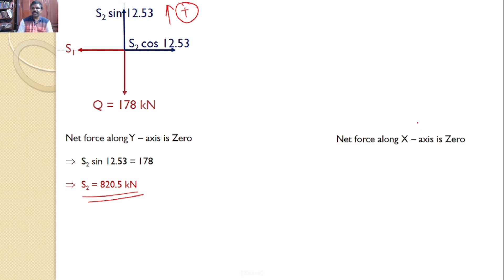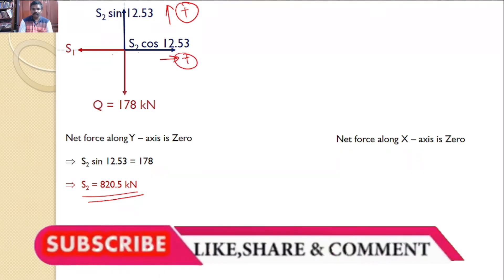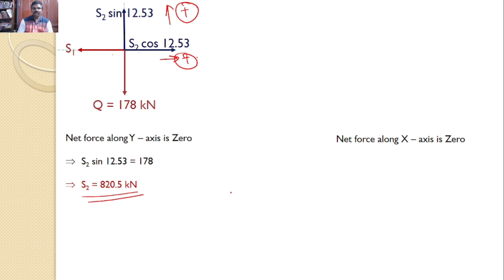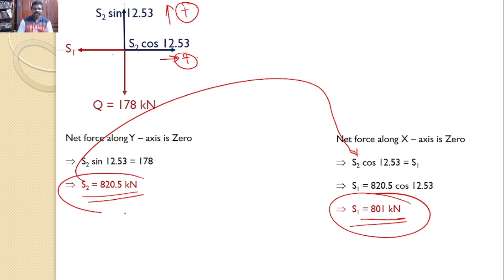Similarly net force along x-axis is 0. There are only two forces. I will take this side is my positive direction. Hence I can write S2 cos 12.53 is equal to S1 and I know that S2 is equal to 820.5 kilonewtons that I can substitute there. Hence I can say S1 is equal to 801 kilonewtons. So S1 801 kilonewtons and S2 820.5 kilonewtons. These two are the answers for the given problem.